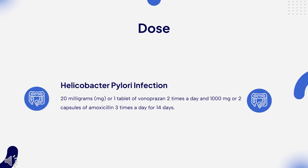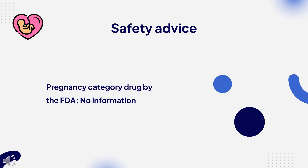Dose for treatment of H. pylori infections — Adults: 20mg (1 tablet of Bonoprazin) 2 times a day, and 1,000mg (2 capsules of amoxicillin) 3 times a day, for 14 days. For children, use and dose must be determined by your doctor.